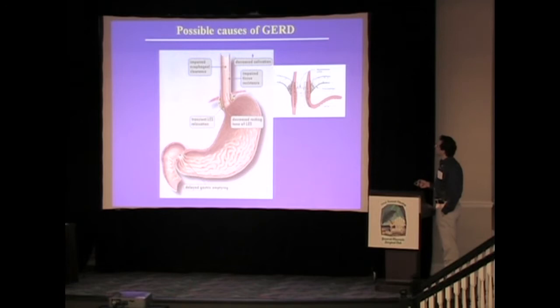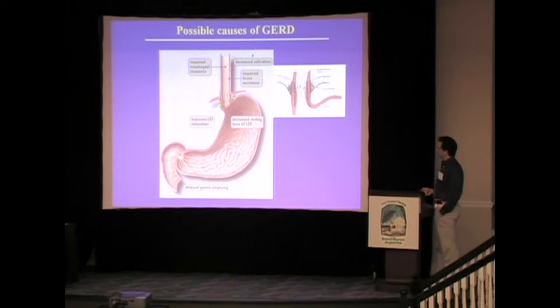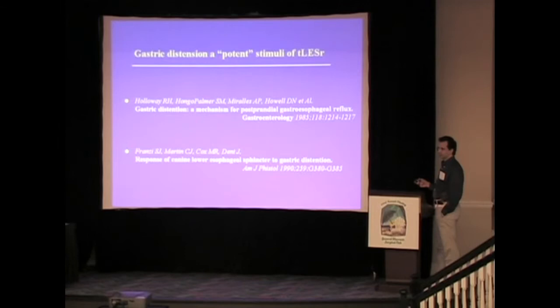What are the possible causes of gastroesophageal reflux disease? Starting from above: decreased salivation, impaired esophageal clearance, impaired tissue resistance, transient lower esophageal sphincter relaxation, decreased resting tone of the LES, and delayed gastric emptying. Gastric emptying is a potent stimulus to transient lower esophageal sphincter relaxation.